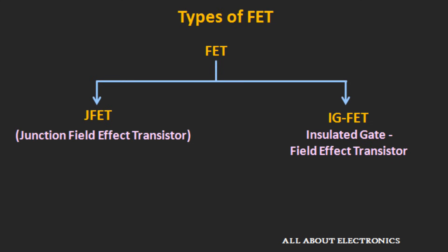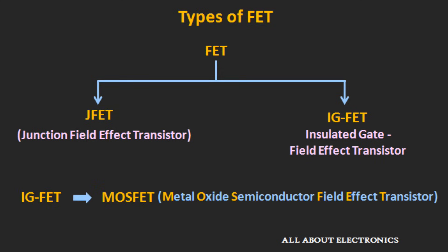Now let's see the different types of FETs. There are basically two types. The first is the junction field effect transistor or JFET. The second type is the IGFET, or insulated gate field effect transistor, and the MOSFET is the most common type of IGFET.